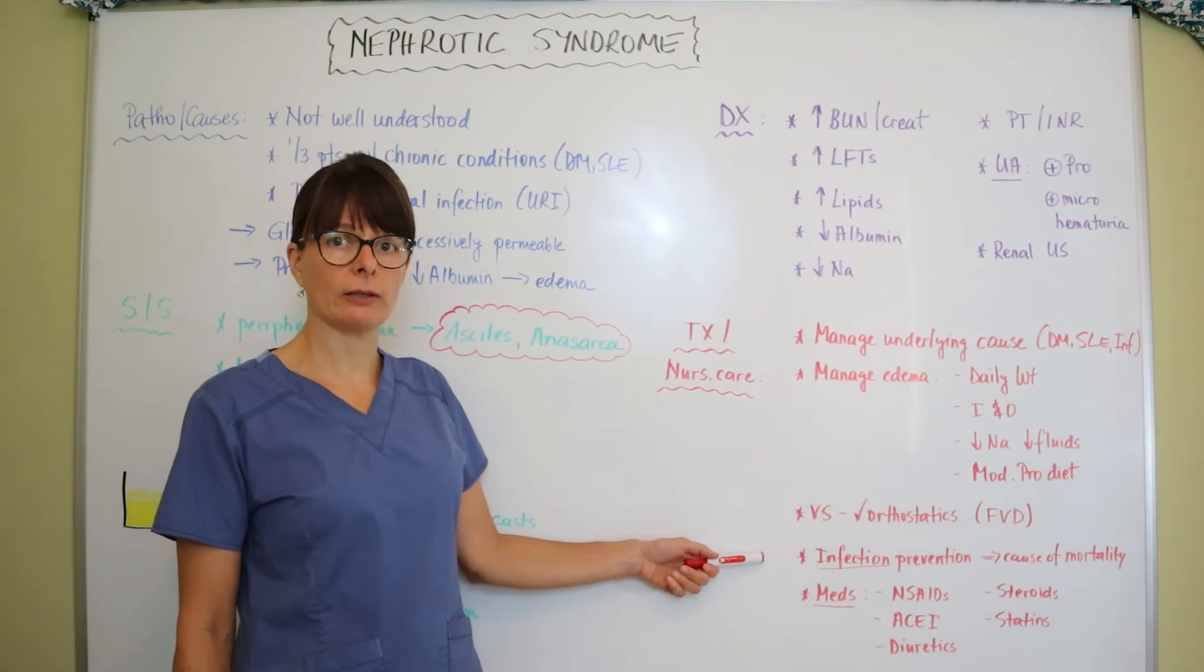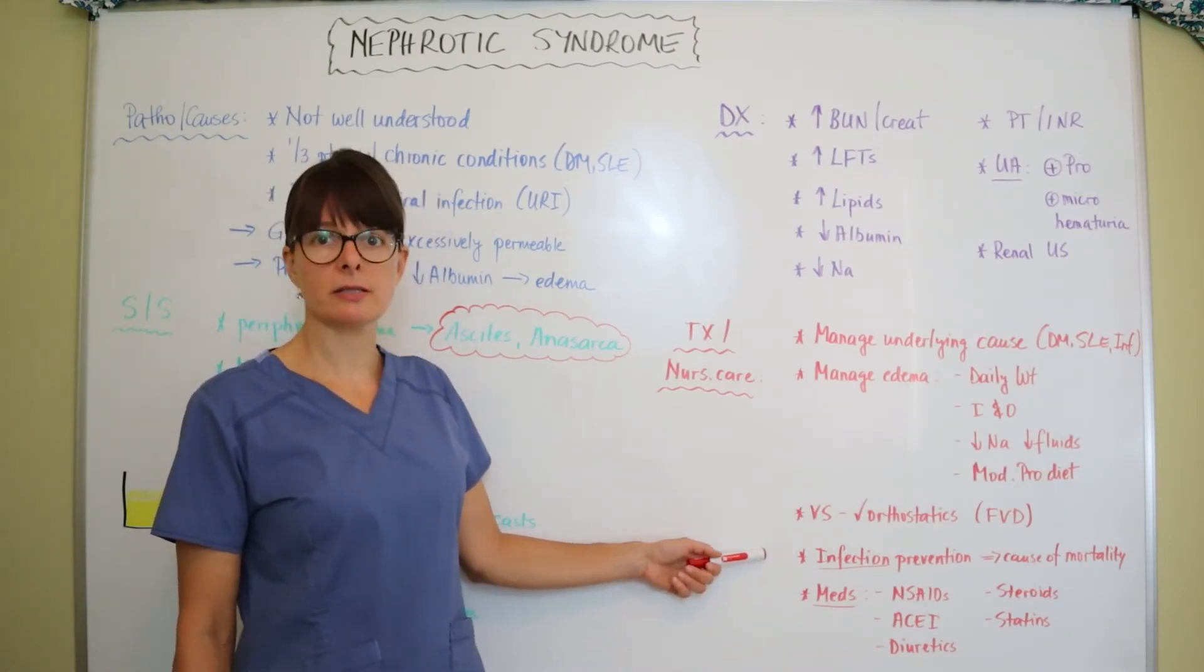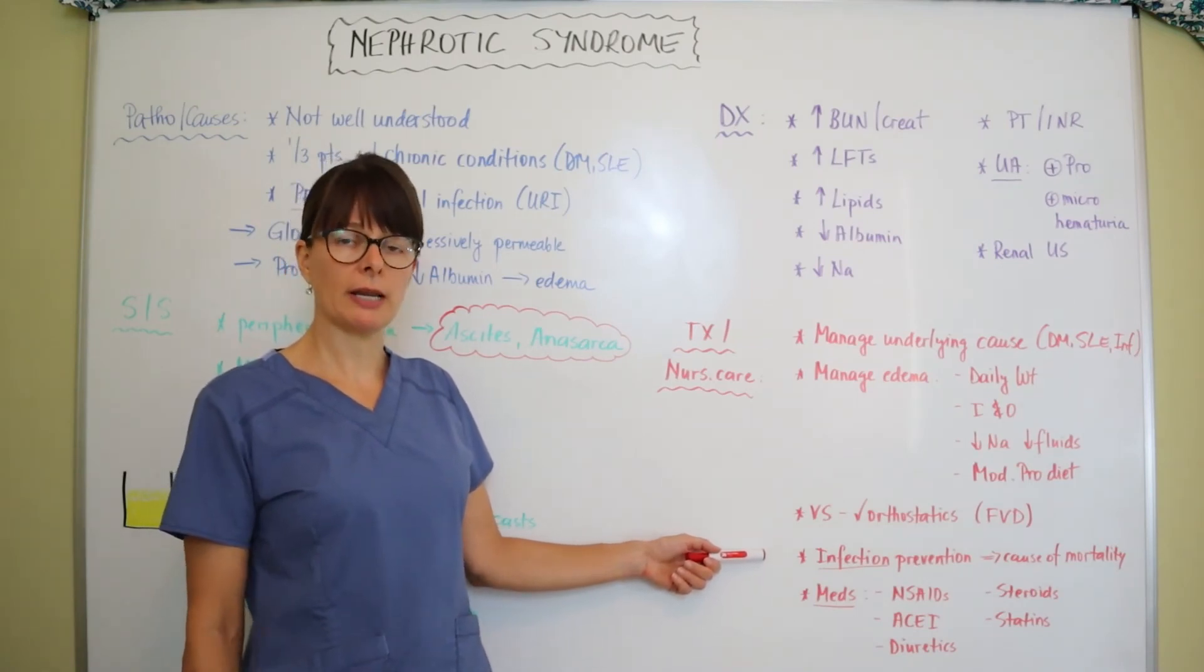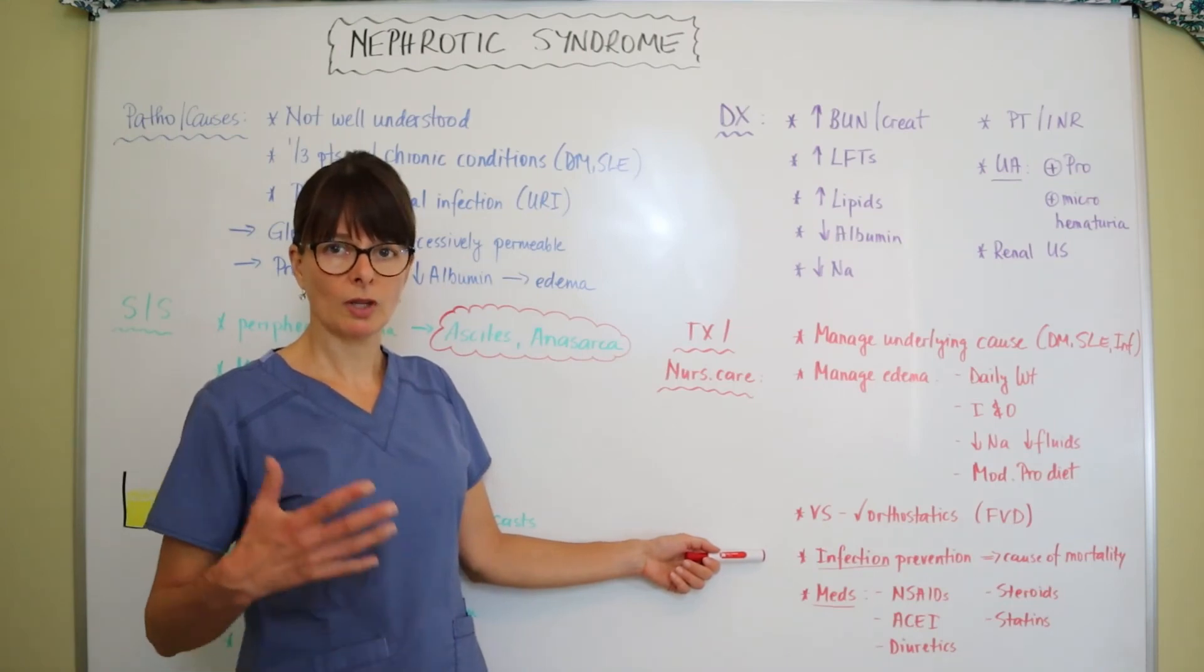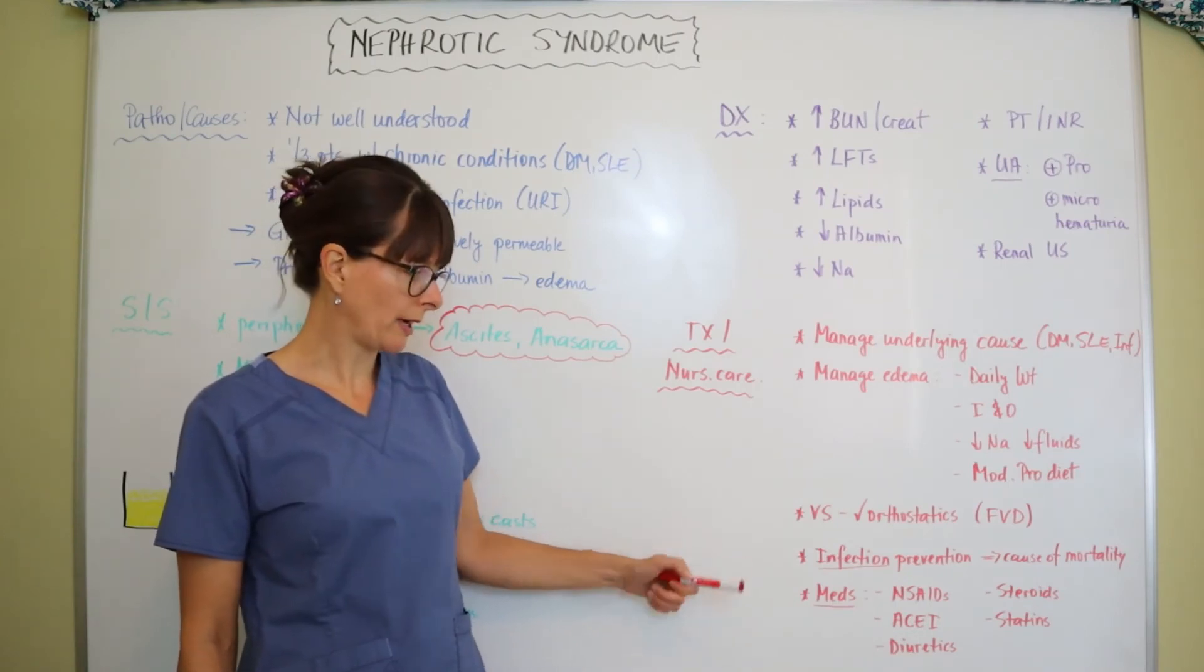The leading cause of mortality from nephrotic syndrome is actually infection, so secondary infection that the patient would be getting when they're hospitalized with this syndrome. We need to be very meticulous in our infection prevention measures and do all the appropriate hand washing and be very meticulous about that, oral care, dental care, the food that they consume.